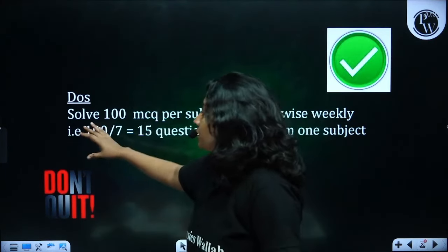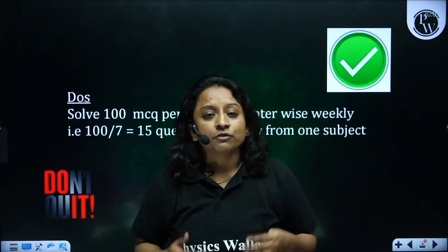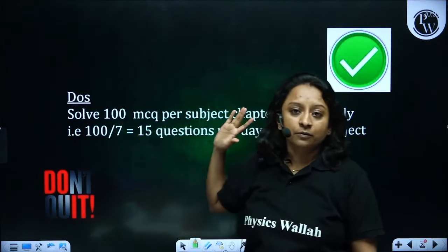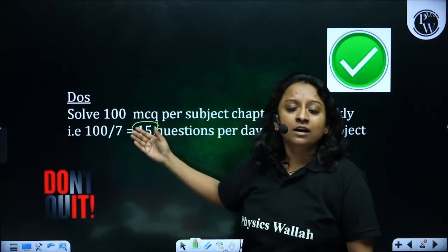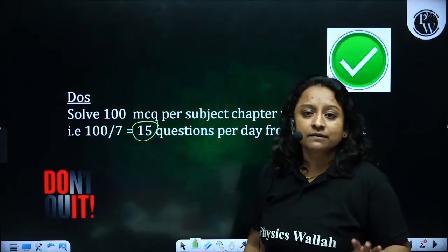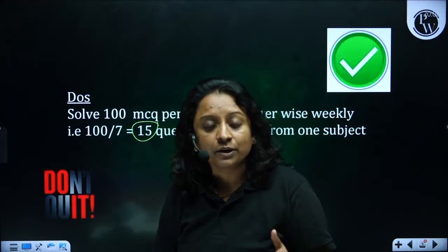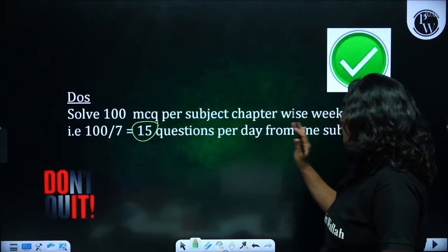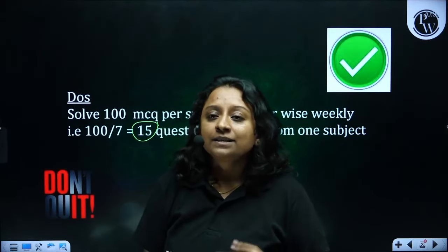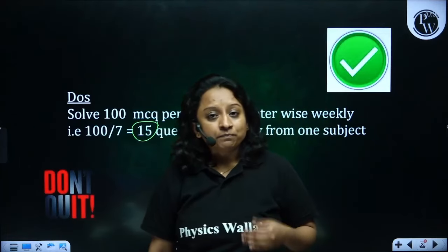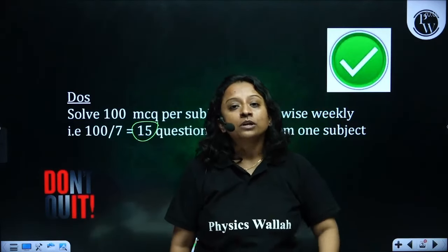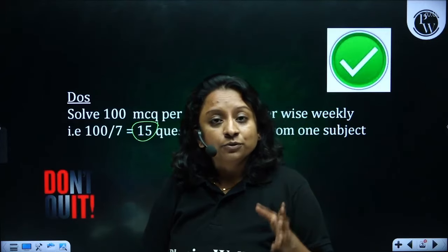Every day, solve a minimum number of questions from chemistry, physics, and mathematics. In a week you should solve 100 questions, and per day you should solve 15 questions per subject. It's very difficult, so don't quit in the beginning — maybe start with 30 questions, then slowly build up to 30, 40, 45, 50, 60. The more questions you solve, the more confidence you gain.